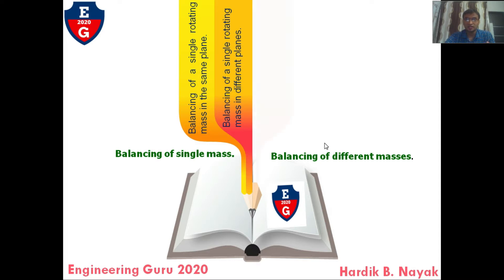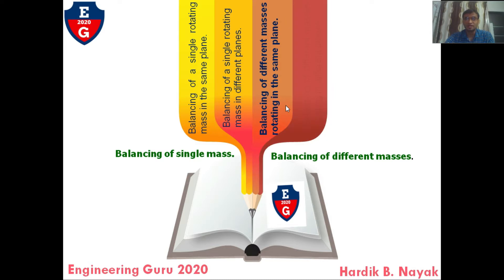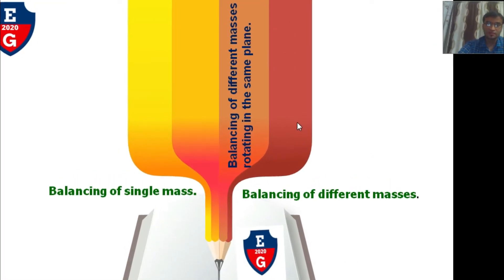The other two types come from balancing of different masses: balancing of different masses rotating in the same plane, and balancing of different masses rotating in different planes. In this video, we are going to focus on balancing of different masses rotating in the same plane.